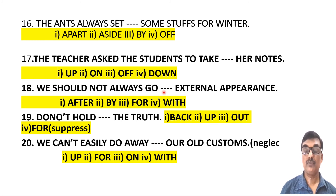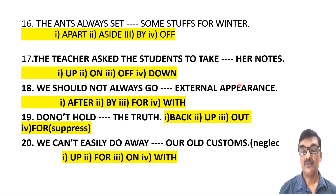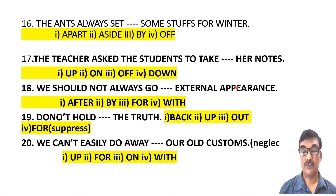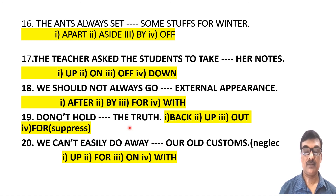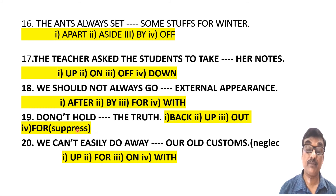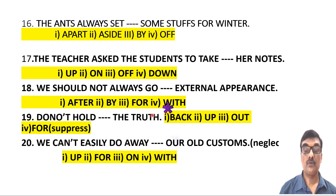Next: 'We should not always go [blank] external appearance.' This means we should not blindly follow external show or external beauty. The correct phrasal verb is 'go after,' so: 'We should not always go after external appearance.' Next: 'Do not hold [blank] the truth.' The meaning here is 'suppress.' The phrasal verb whose meaning is 'suppress' is 'hold back,' so: 'Do not hold back the truth.'